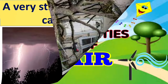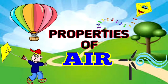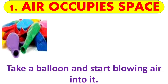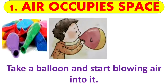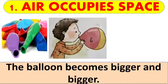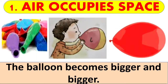Now let us see the properties of AIR. The first property is AIR occupies space. But how can we say this? Let us do an activity. Take a balloon and start blowing air into it. What do you notice? Yes, the balloon becomes bigger and bigger, and this shows that AIR occupies the space in which it is filled.